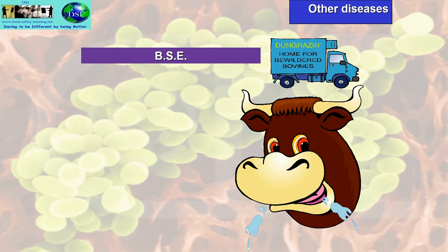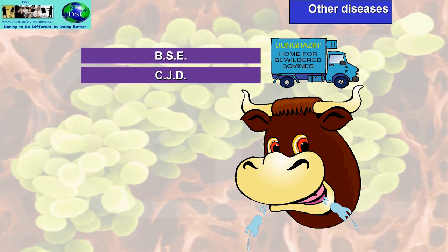Other diseases include BSE — Bovine Spongiform Encephalopathy — which affects the brain, known as mad cow disease. It occurs due to a prion (a protein ion) present in animals that enters the food chain and causes CJD — Creutzfeldt-Jakob disease — the human equivalent of BSE.